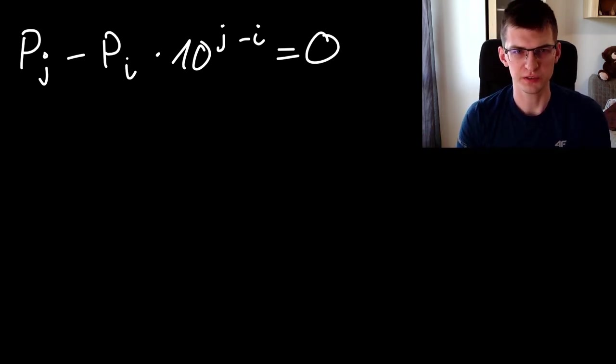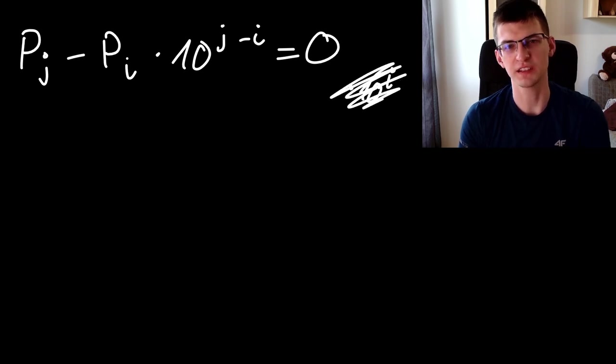I want terms with i to be next to each other. If I multiply both sides by 10 to i, I will not achieve that. I will get rid of this but the formula will not be easier. Let's instead divide. Let's divide by 10 to j both sides.